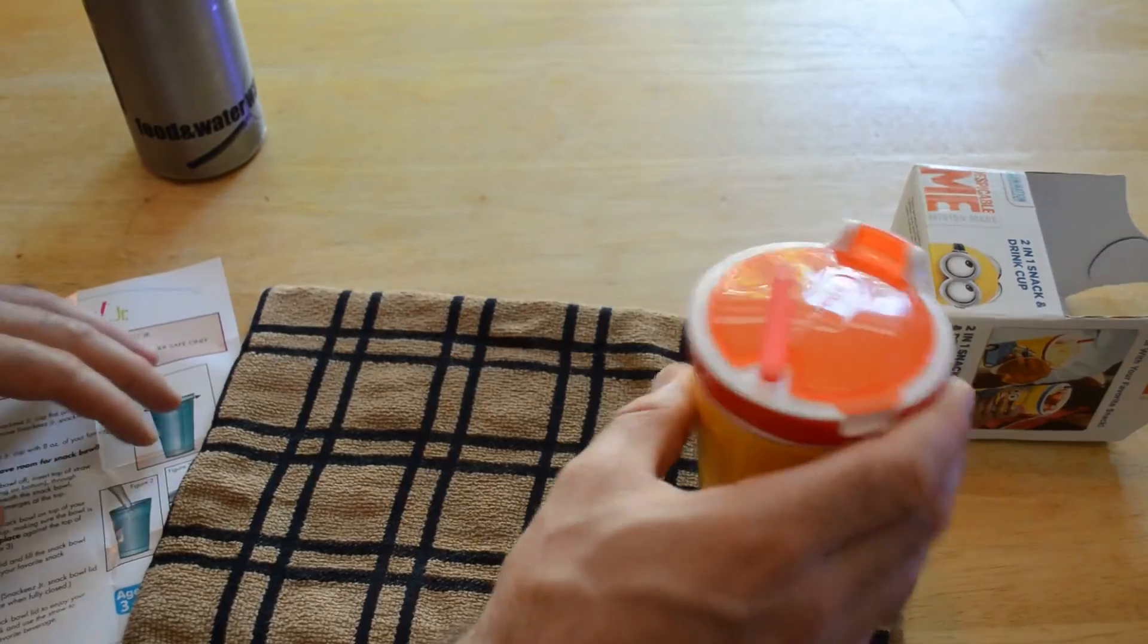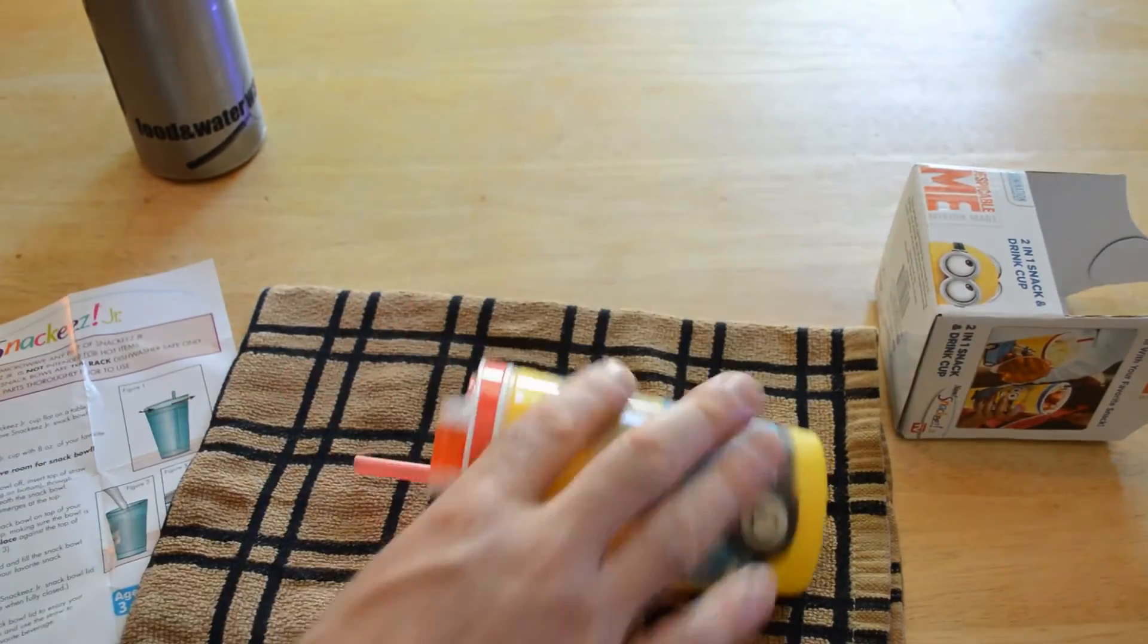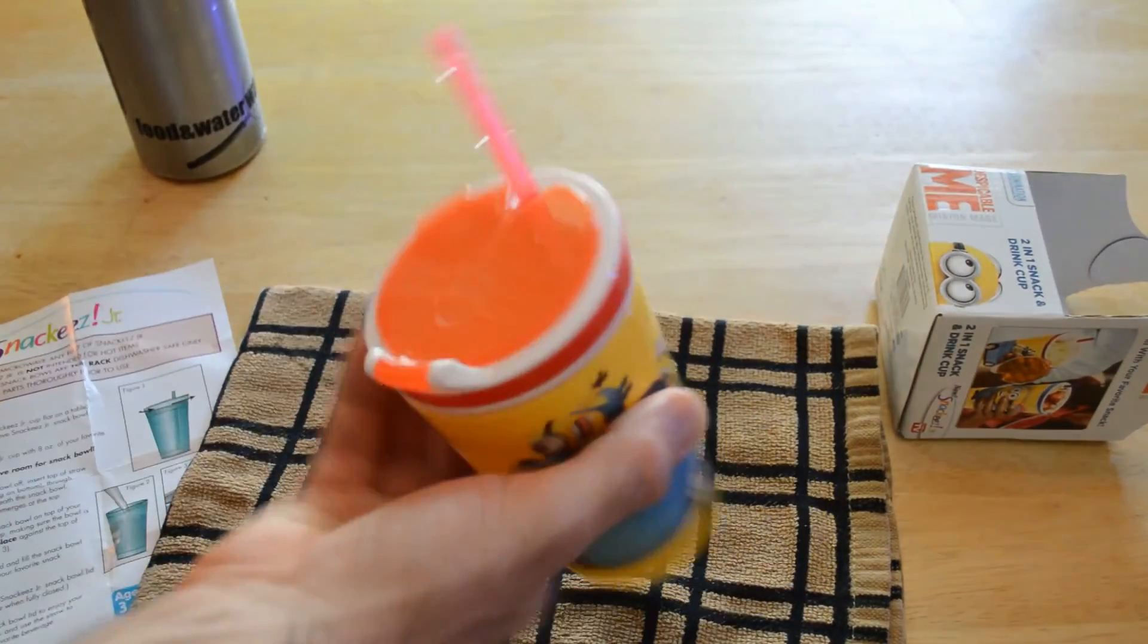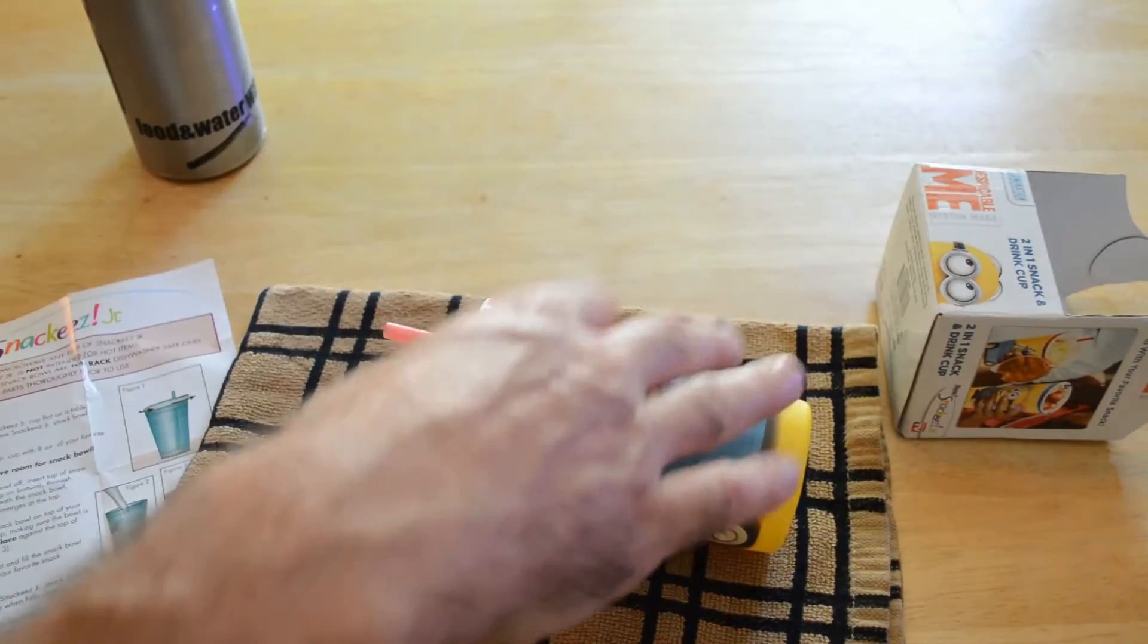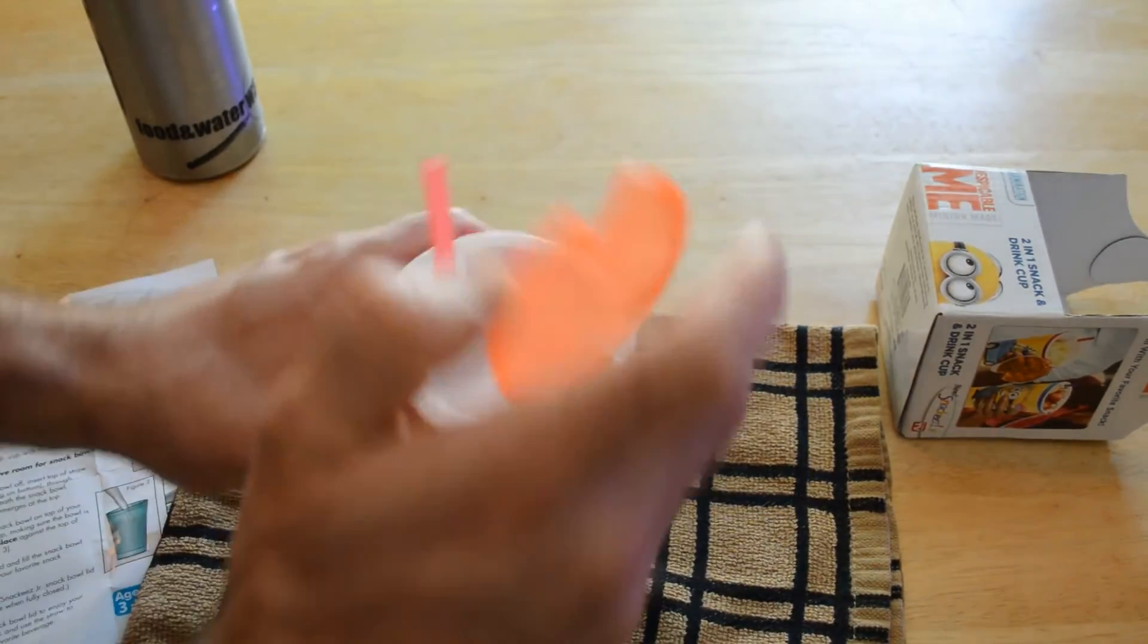So I just tipped it over and nothing's coming out. I mean, stuff comes out of the straw, but the seal's pretty good. And if you just tipped it like that, nothing comes out of the straw.